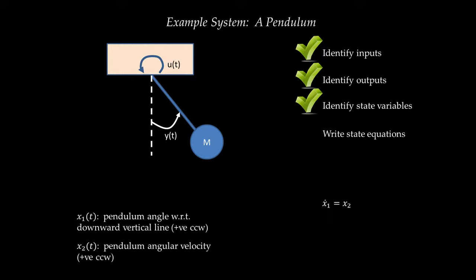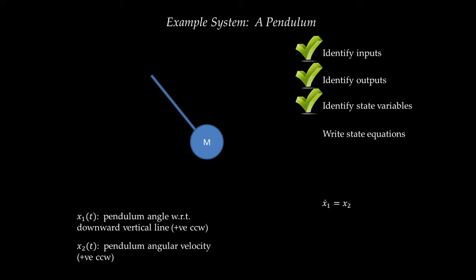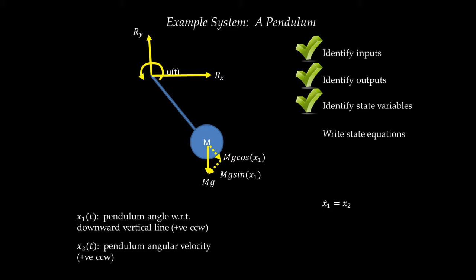To apply the law, we draw a free body diagram. I remove everything but the pendulum and draw the forces and moments acting on it. There is the input torque U of T, reaction forces Rx and Ry from the support, and the force of gravity broken into a component M·g·cos(θ) along the pendulum and M·g·sin(θ) perpendicular to it. The hinge point is where Rx and Ry are applied. Taking the summation of moments around this hinge point equals the inertia of the pendulum around that point multiplied by angular acceleration.